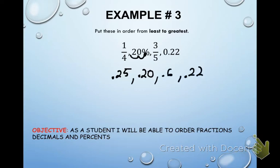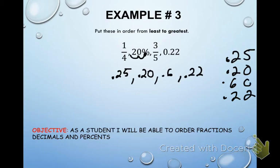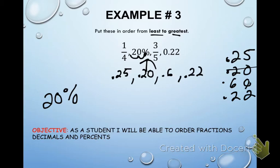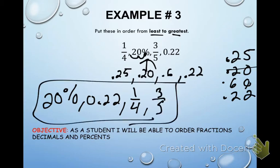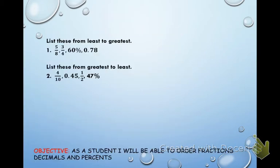The last one is 0.22. Line them straight up and down: 0.25, 0.20, 0.60, 0.22 — add a zero placeholder. The least is 0.20, which was 20%. Next is 0.22. Then 0.25, written as the fraction one-fourth. Finally, the greatest is three-fifths. Least to greatest — circle it, you're done.